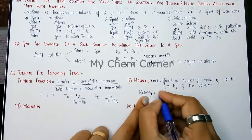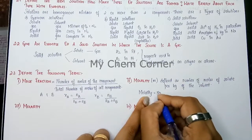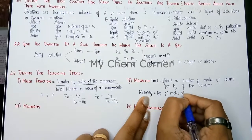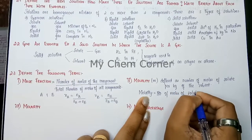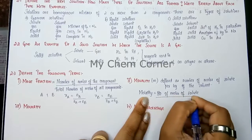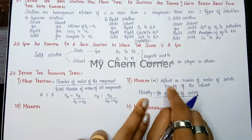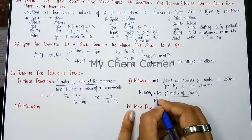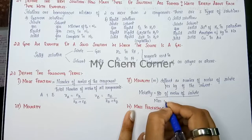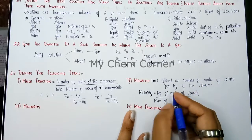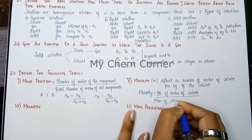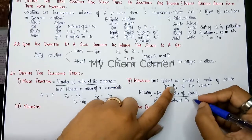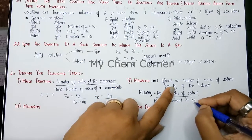In formula form, molality equals the number of moles of solute divided by the mass of solvent. Since it is per kg of solvent, we write mass of solvent in kg in the denominator. So: molality = moles of solute / mass of solvent (in kg).